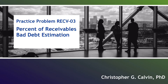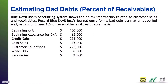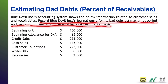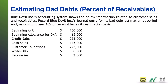Welcome to Practice Problem Receivable 03. In this one you're going to have to calculate the bad debt estimation using the percent of receivables method. Blue Devil Inc.'s accounting system shows the below information related to customer sales and receivables. Record Blue Devil Inc.'s journal entry for its bad debt estimation at period end, assuming 10 percent of receivables is the estimation basis.